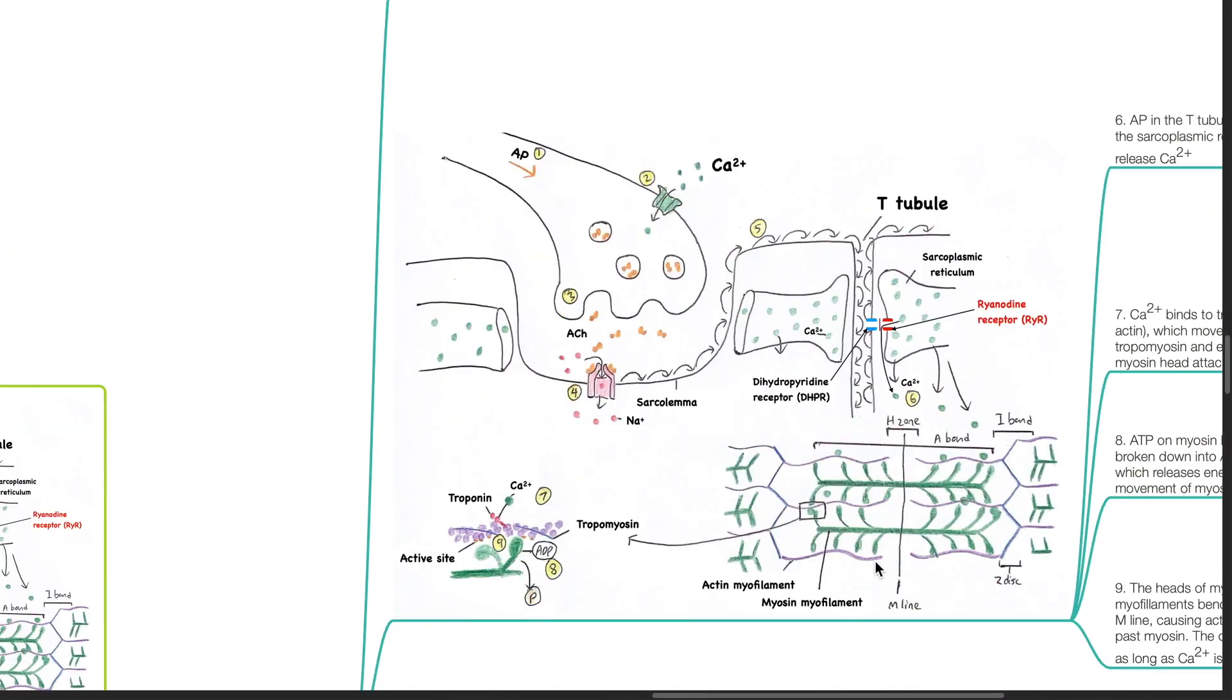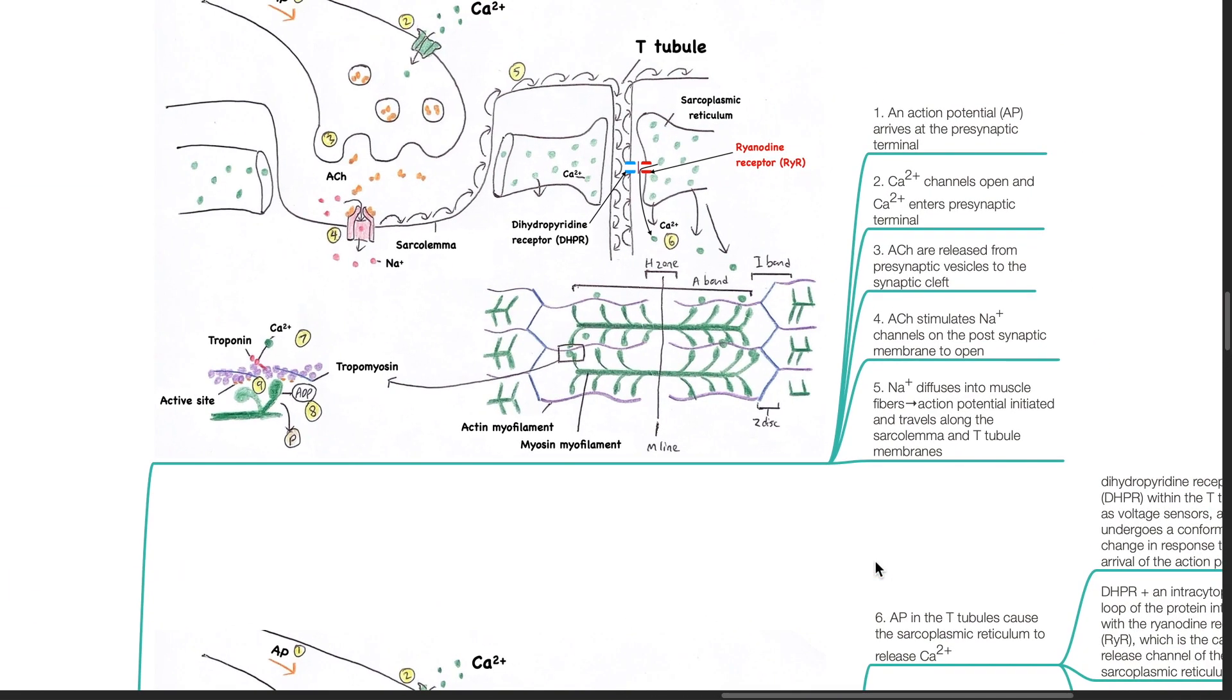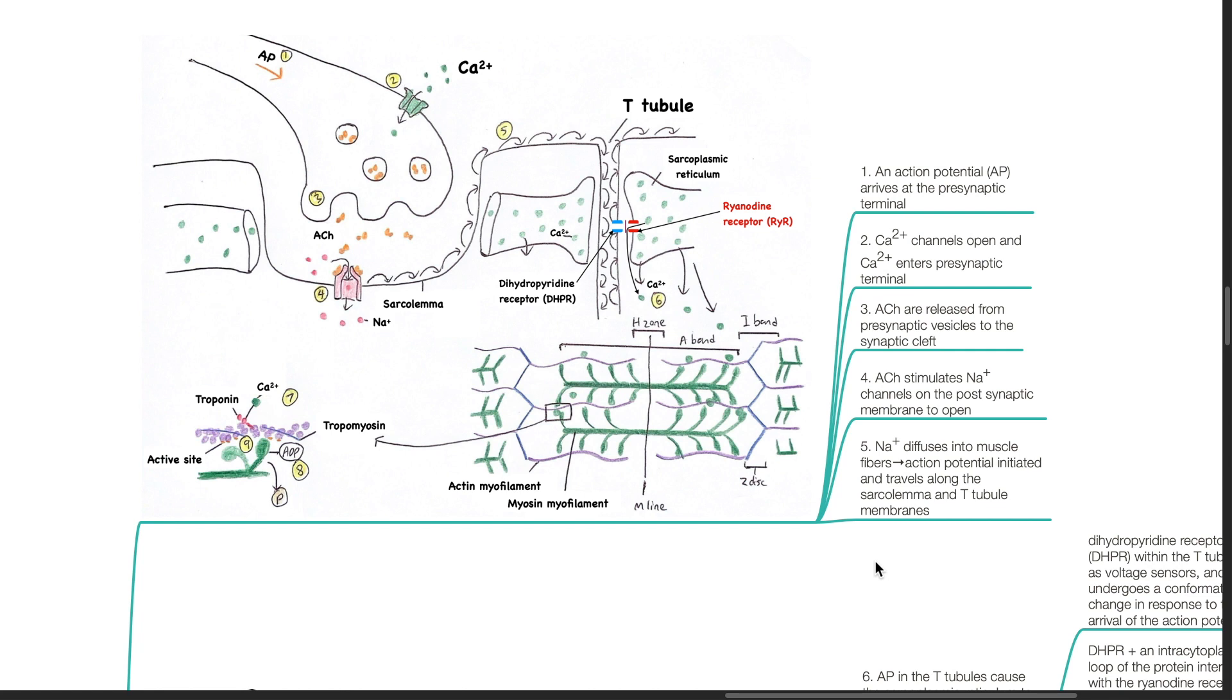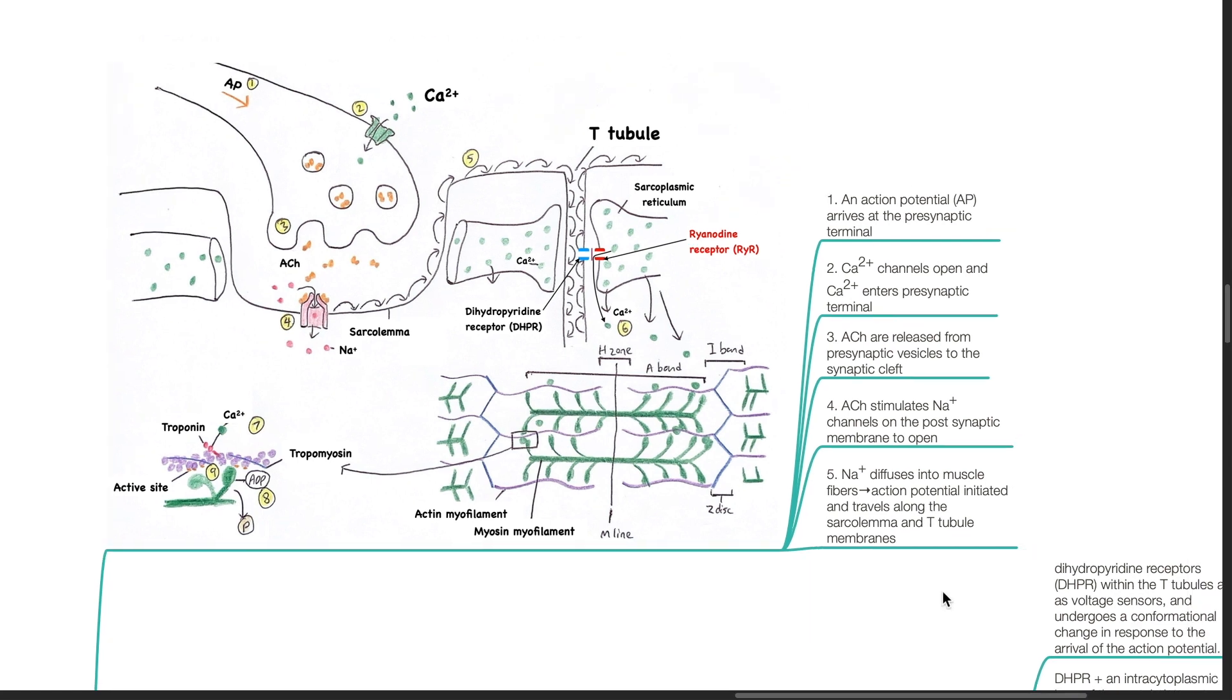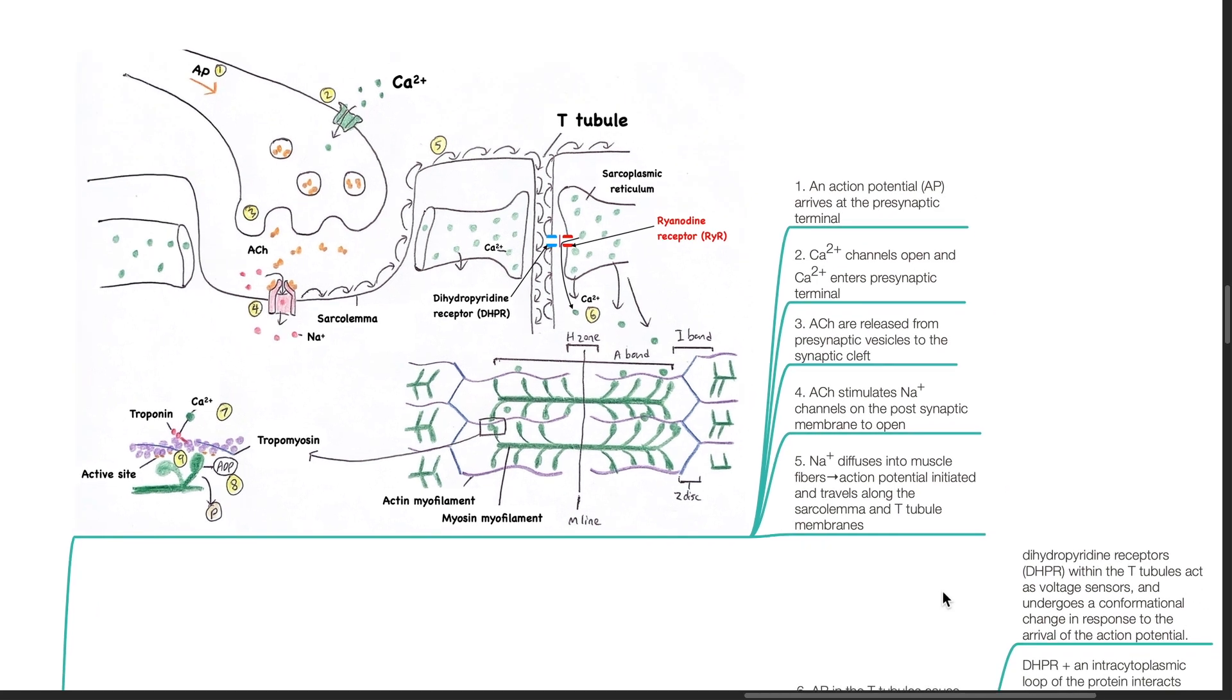Summary of processes leading to muscle contraction. An action potential arrives at the presynaptic terminal. Calcium channels open and calcium enters the presynaptic terminal and acetylcholine is released from the presynaptic vesicles to the synaptic cleft. Acetylcholine stimulates sodium channels on the postsynaptic membrane which then open. Sodium diffuses into the muscle fibers and the action potential initiated travels along the sarcolemma and T-tubule membranes.